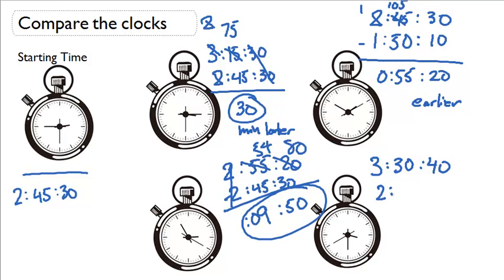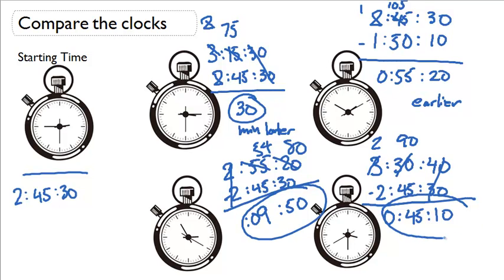And then for here, we're going to subtract. We get 10. We have to borrow here. So this becomes a 90, this becomes a 2. This becomes 45 minutes and this becomes 0. So this is 45 minutes and 10 seconds later.